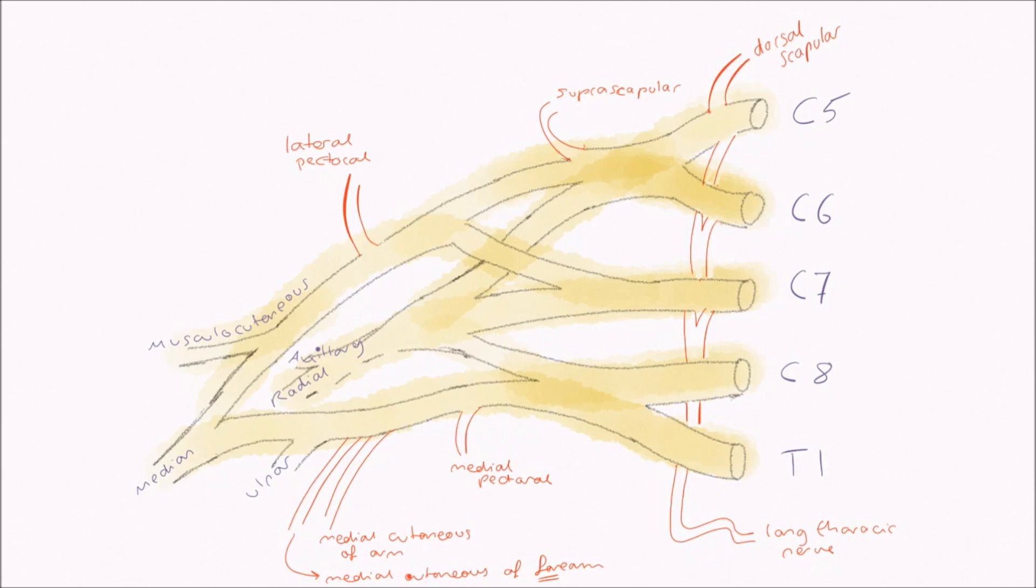We're nearly there now, we just need the three other branches of the posterior cord, which leave the cord in a tight trio. Most proximally is the superior subscapular nerve, which supplies the superior portion of subscapularis. In the middle, the thoracodorsal nerve, which runs down the axilla wall to supply latissimus dorsi. And finally, the inferior subscapular nerve, which innervates the inferior portion of subscapularis and teres major.